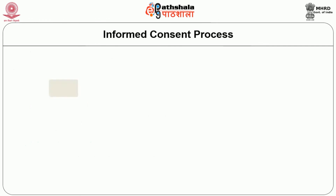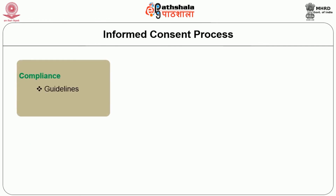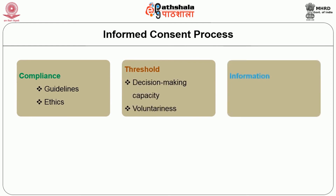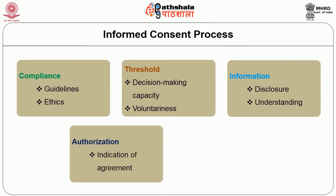The informed consent process consists of four key components. First is compliance — the guidelines and ethics demand you must take the informed consent signature. Second is voluntary decision-making — the decision is with the individuals, not with the investigators. Third is adequate information disclosure — you give them enough information and ensure they understand it. Fourth is authorization — the indication of agreement is that they are signing. And of course, confidentiality must be maintained throughout.